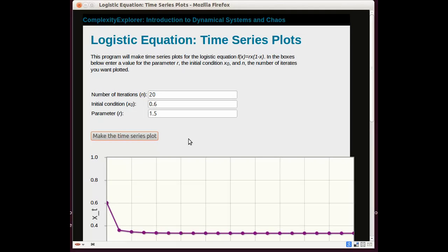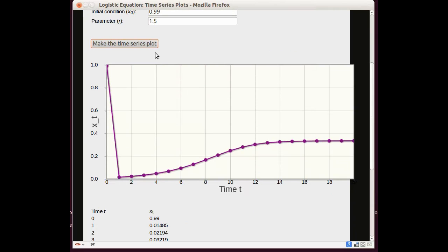Let's try a few more things just to sort of get a feel for the logistic equation. I'll try an initial condition of 0.99. This means we're 99% of the way to the annihilation population. So perhaps not surprisingly, we initially see a very large population drop.